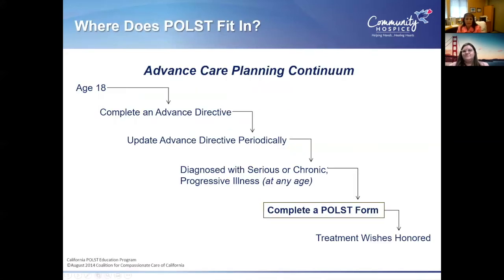Regarding the continuum of when these apply: once you're 18, you can complete an advanced directive. I completed one a long time ago and have updated it over time as I've gotten older. If you become diagnosed with a serious, chronic, or progressive illness at any age, you definitely want to get one or update an existing one. Hospitals now ask if you have one when you're admitted, and if you don't, they want you to complete one so that treatment is based on your wishes. Medical professionals can then go back to the document if family members question treatment decisions.